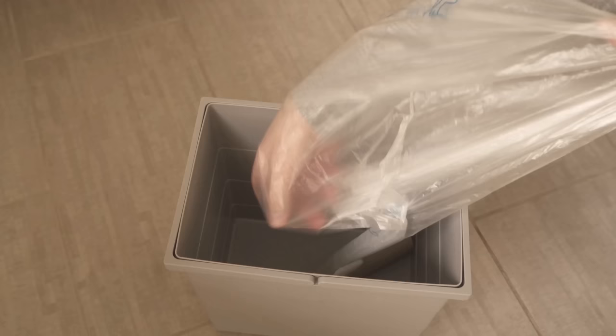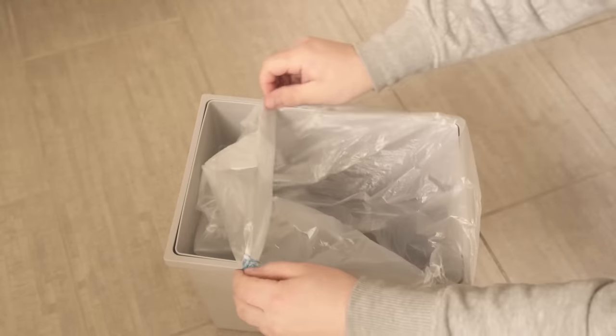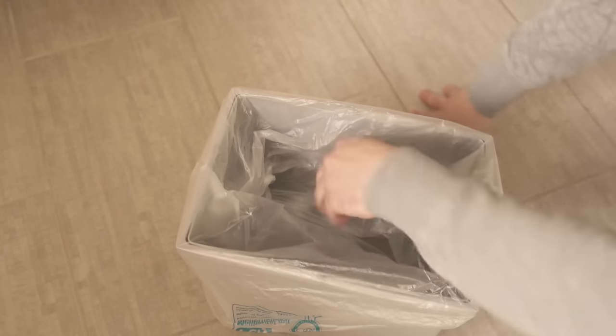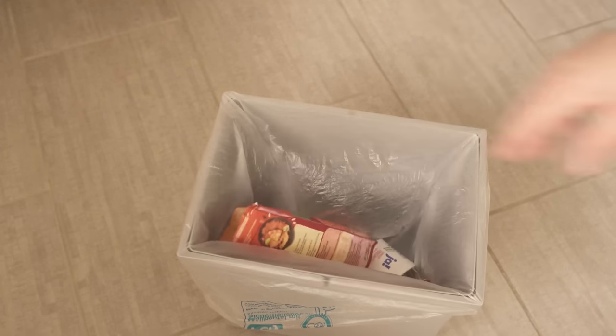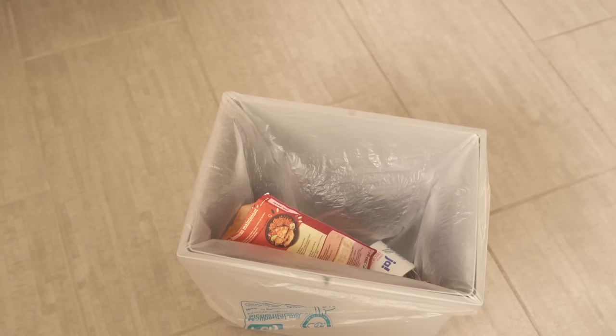This means you can throw your rubbish into the bin as usual, and when it is full, you simply pull it out to the point where you can separate the bin liner. Then you take the next bin liner, pull it out again, and put it around your bin.